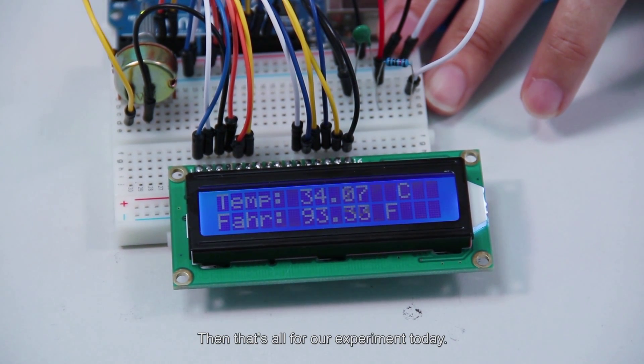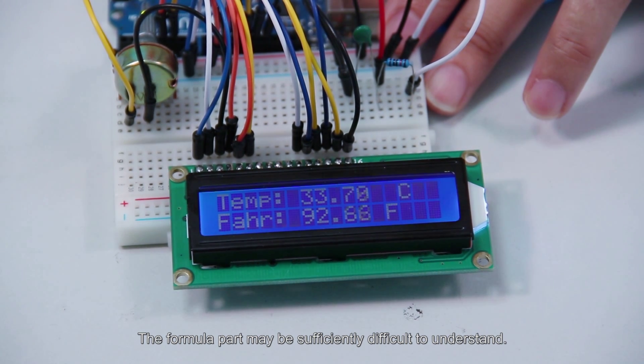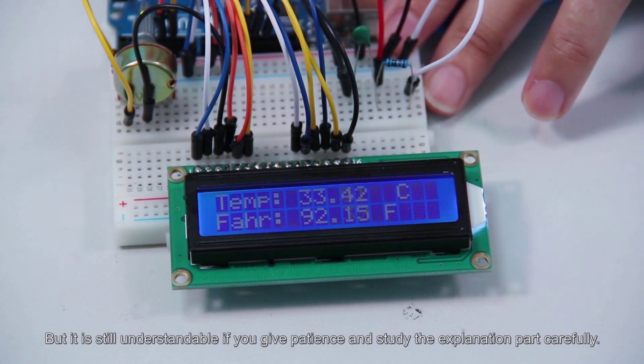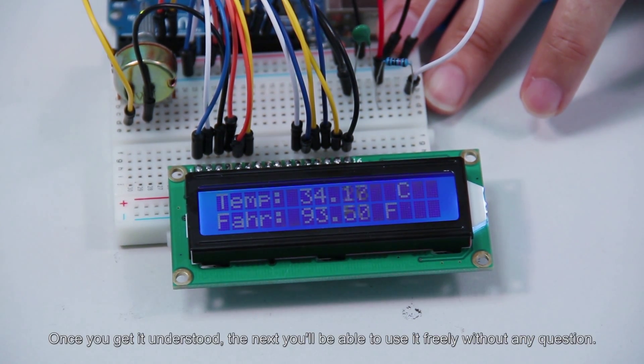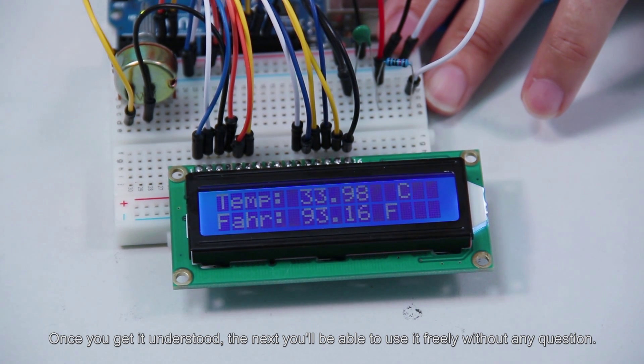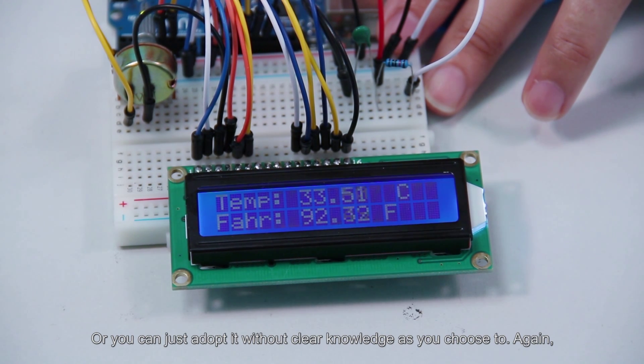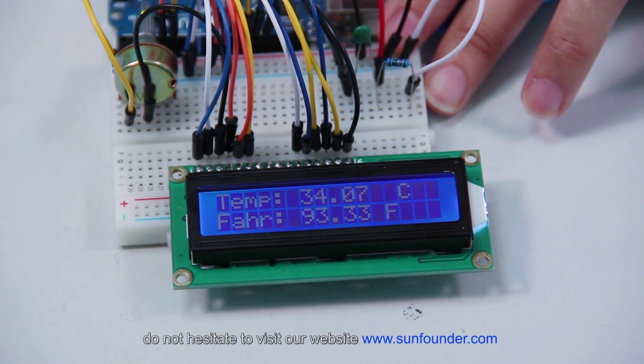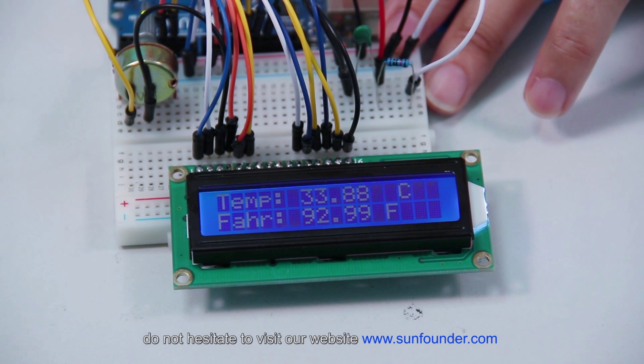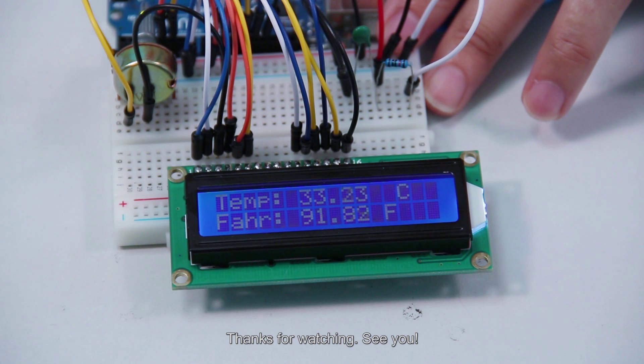Then that's all for our experiment today. The formula part may be sufficiently difficult to understand. But it is still understandable if you give patience and study the explanation part carefully. Once you get it understood, the next you'll be able to use it freely without any question. Or you can just adopt it without clear knowledge as you choose to. Again, for any questions or suggestions, do not hesitate to visit our website www.SunFounder.com and leave your comments or message. Thanks for watching, see you.